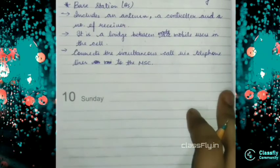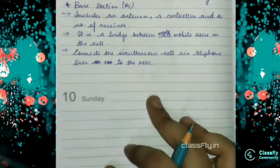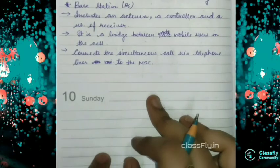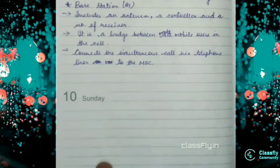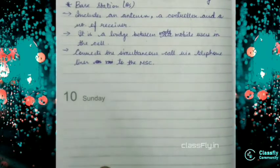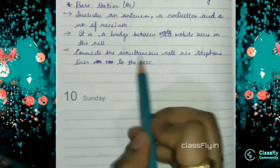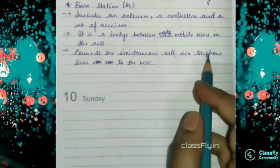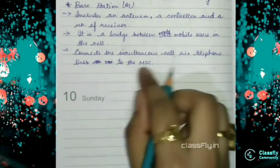Now see, we studied that the first signal moves to the mobile station, then it moves to the base station. So we have to also define what is base station. See, base station also contains antenna, a controller and a number of receivers. Because it is not a particular mobile phone, it is a bridge between mobile phone users in this cell. And so there are a number of receivers. So it connects the simultaneous call via telephone lines to the MSC.